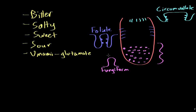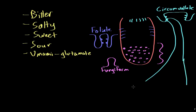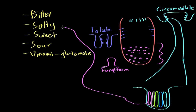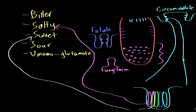Each one of these taste buds, if we zoom in to an individual taste bud, we would find a little pore. And this pore would have a bunch of different types of cells — one cell, another cell next to it, a third cell, and so on. Each one of these cells is responsible for one of the five tastes. So this cell could detect salty things, and this other cell could detect sweet things, and so on.